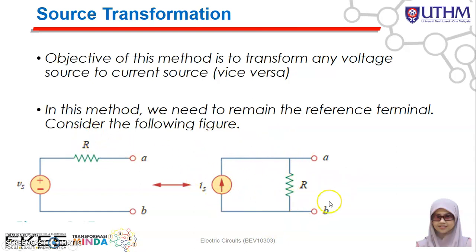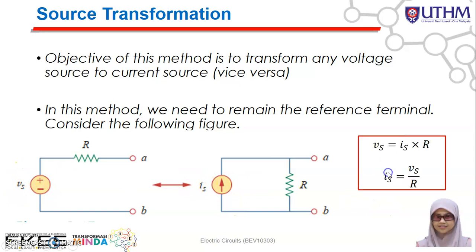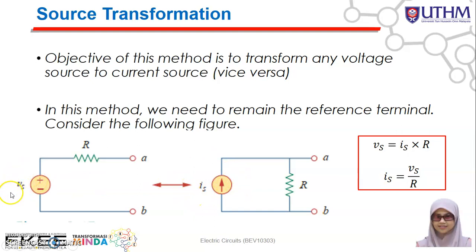This circuit is actually equivalent to a current source connected in parallel with the resistor, where the value of R is the same. The relationship between Vs and Is is given by the equation Vs = Is × R. So if you have a voltage supply connected in series with a resistor, you can simply transform it to this configuration. To find the value of the current source, you just divide Vs by R to find the value of Is.